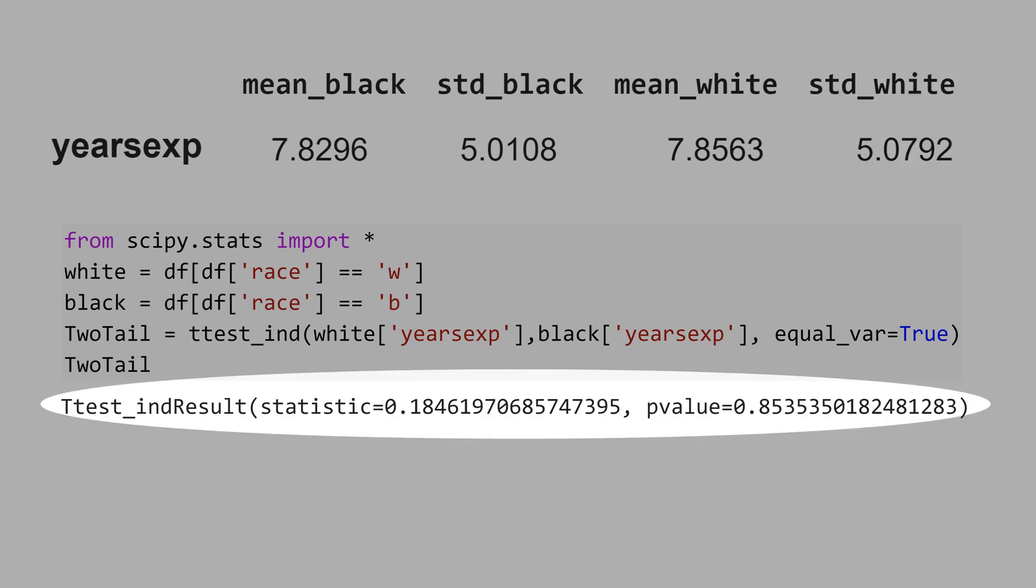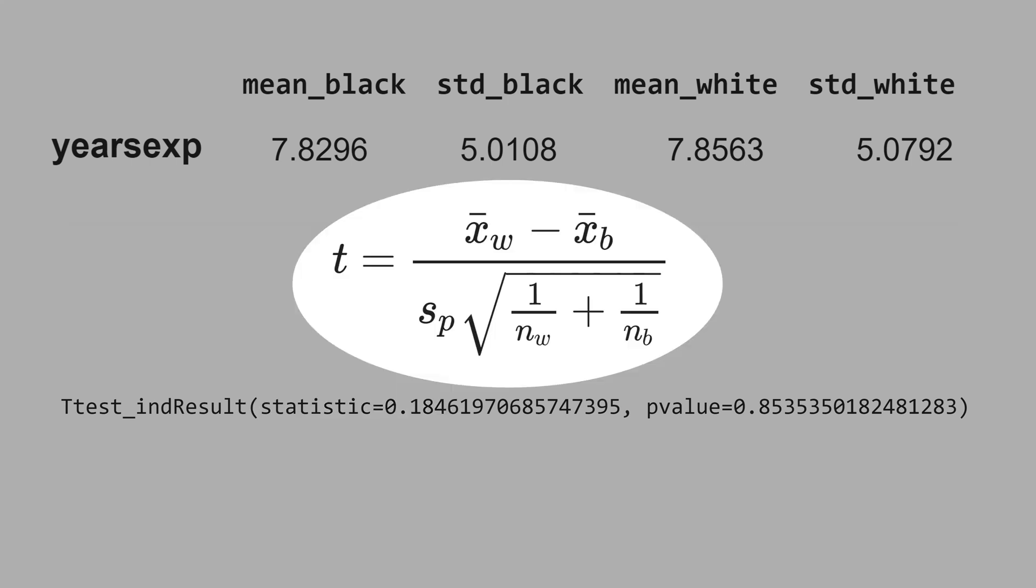Let's see the result of the two-tail test. The t-statistic is 0.18, and it's given by this formula here. The t-statistic is the ratio of the null hypothesis divided by the standard error. We are just counting the number of standard errors that separate the estimate from the null hypothesis.